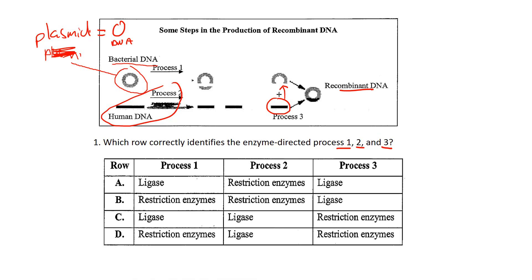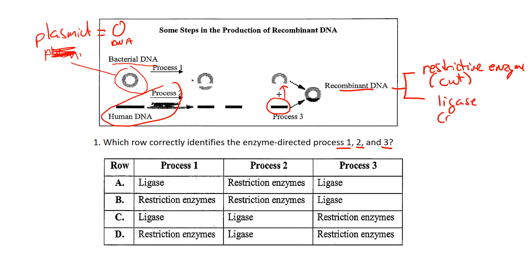The key concepts to know here — even more than the steps — are that you need a restriction enzyme, which acts like biological scissors and is responsible for cutting, and you also need DNA ligase, which acts like the glue that splices things together. You'll see multiple questions about restriction enzymes and ligase, so make sure you don't get those mixed up.